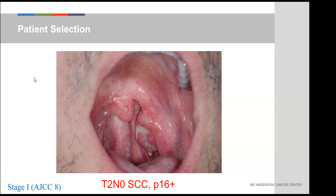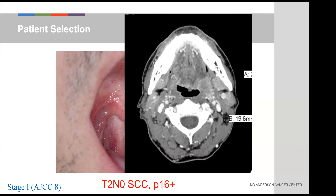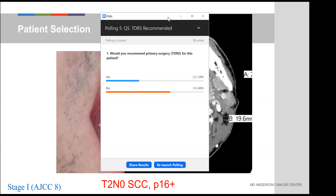Now let me spice it up with a different patient — also T2, N0, P16-positive — but this one is less exophytic. It has a more endophytic appearance on imaging. There's no trismus, but it looks more endophytic. I'd like to get the audience's opinion on this as well. Majority of people are saying they would not offer surgery. Tell me how you think about the concept of endophytic versus exophytic.